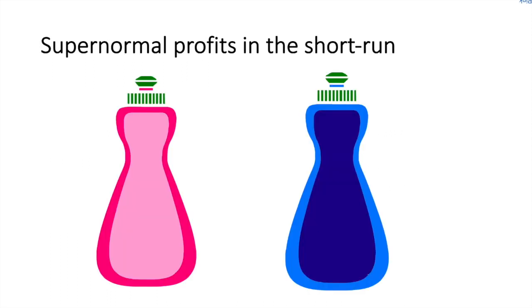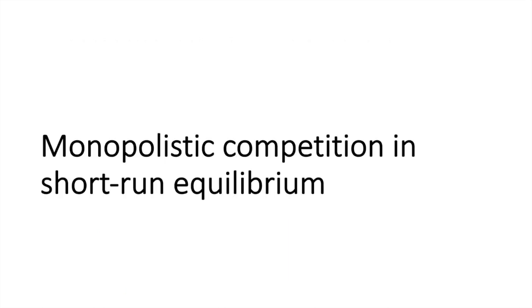Imagine a firm produces dishwashing liquid and decides to expand its product offering and launches a new blueberry washing liquid. The product is an instant hit with consumers and demand levels are so high that the firm starts to earn a supernormal profit.